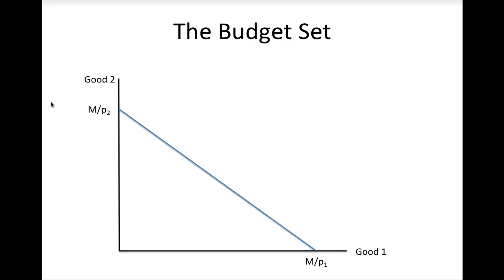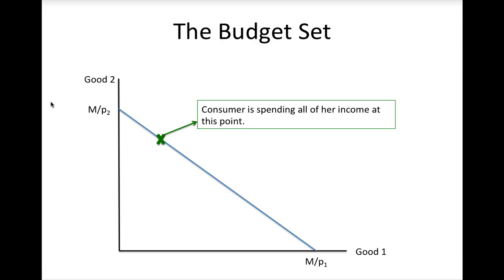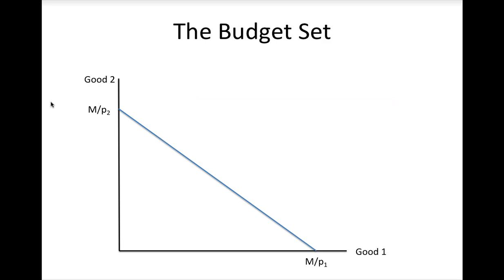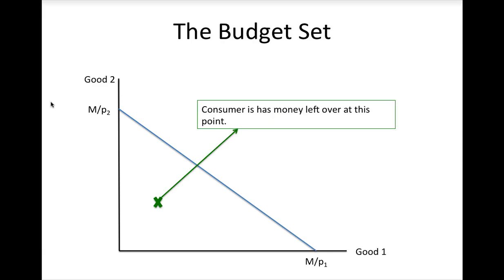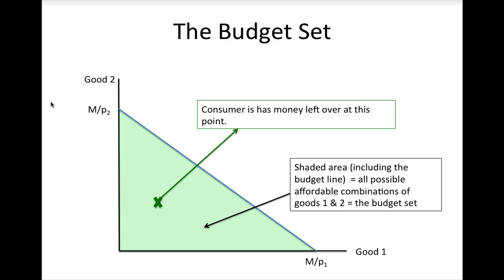Because the budget line satisfies P1·X1 + P2·X2 = M, if a consumer is at a combination on the budget line, she is spending exactly all of her income. Points to the northeast of the budget line are unaffordable — the consumer does not have enough income to purchase those combinations. Points inside the line leave money left over, so all points on the line and inside the line are affordable. The set of all affordable combinations of good 1 and good 2 is called the budget set, which is the shaded triangle in this slide.